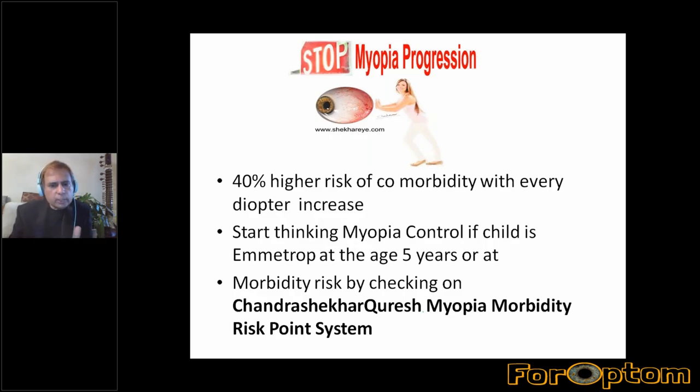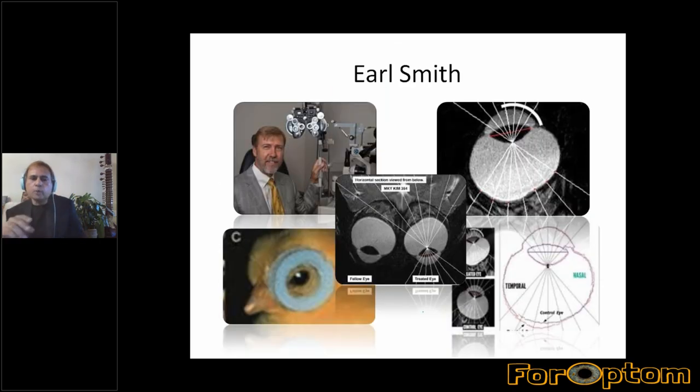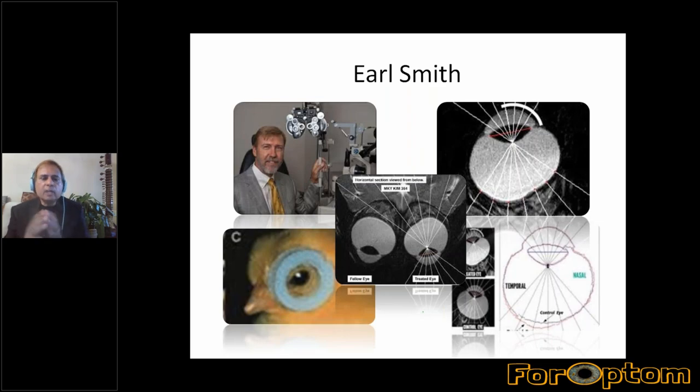If you see a child at age five and he is emmetropic when he should be hyperopic, that means he is already going to go into myopic progression. You can advise the parents and keep monitoring. Early intervention doesn't mean you have to give glasses or start atropine — you can ask parents to spend more time outdoors, more than 2.5 hours, encourage a good diet with green vegetables, and reduce reading and writing after sunset. This can also help control progression.